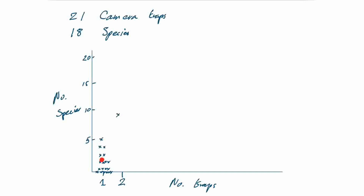We still get quite a few zeros from pairs with no species, along with many intermediate combinations. We can continue this for three camera traps — there are over a thousand combinations of three traps from 21, and we can sample a large number of them using a computer. Again, we can work out an average number of species we might have seen if we only had three camera traps rather than the 21 that we used.